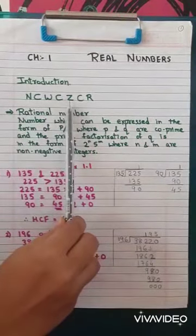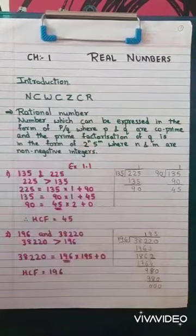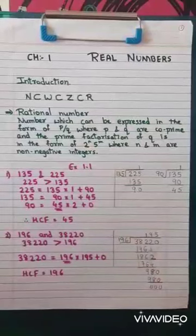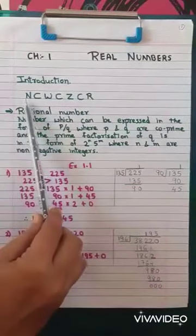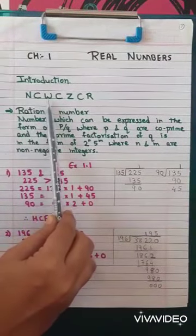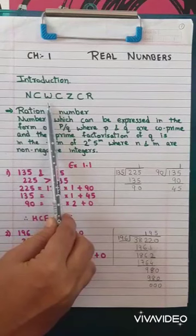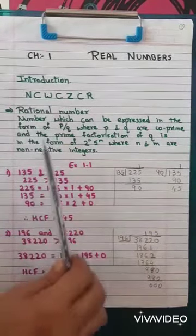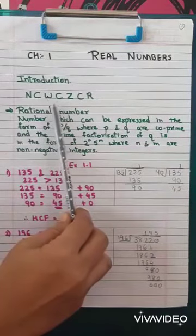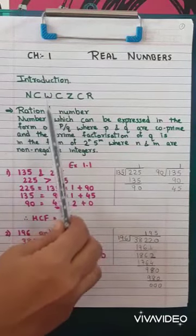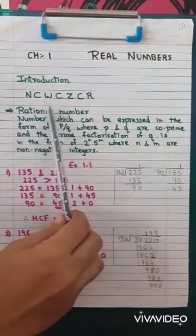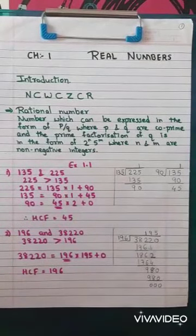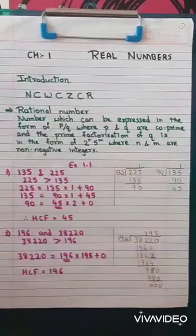Integers — the symbol for integers is Z. Integers include negative numbers, positive numbers and 0. All the members of natural numbers are present in whole numbers, so natural number is a subset of whole number. Similarly, all the members of whole numbers are present in integers, so whole number is a subset of integers. Then integers is a subset of real numbers.